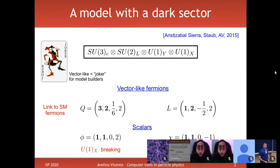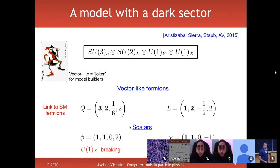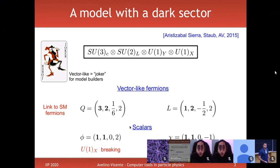The additional U(1)_X comes with a gauge boson that would be massless unless we break the symmetry. For this reason we need an additional scalar singlet φ — a singlet under everything but U(1)_X — whose VEV breaks U(1)_X and gives a mass to the new gauge boson. We also have an additional scalar χ, which can be a dark matter candidate. Since these fields are vector-like, you can write Dirac mass terms and Yukawa interactions coupling the SM fields to the new fields via φ.